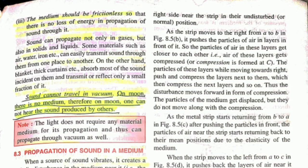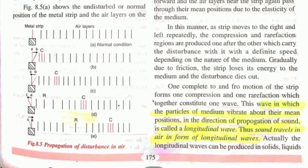Sound can propagate in gases as well as in solids and liquids, but sound cannot travel in vacuum because there is no medium. The difference between gases and vacuum is that vacuum does not have gas molecules, so there is no medium. Sound cannot travel on the moon because there is no medium — sound propagation always requires a material medium.